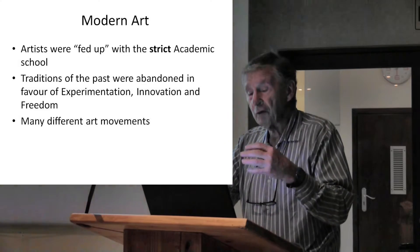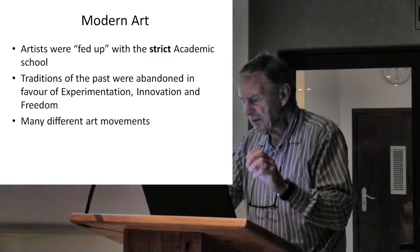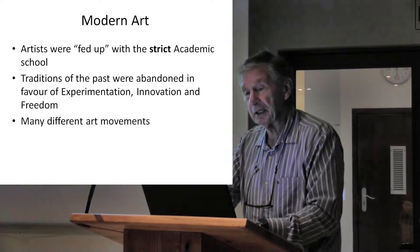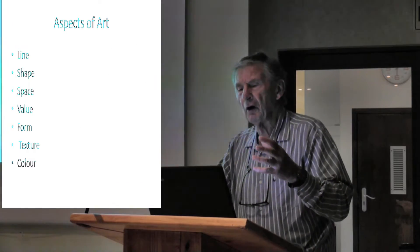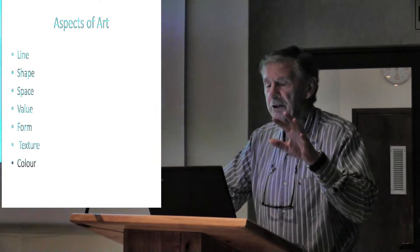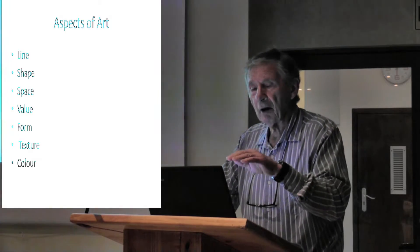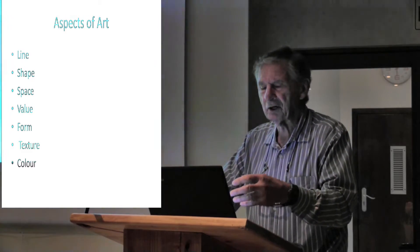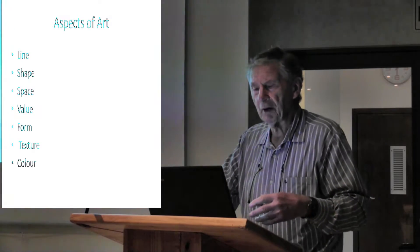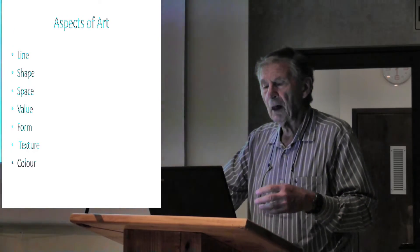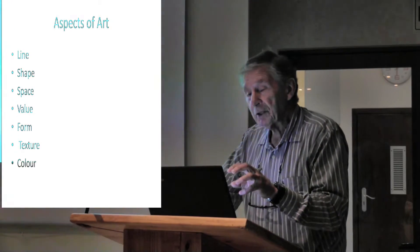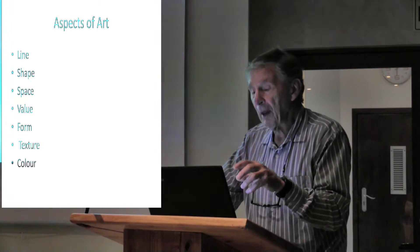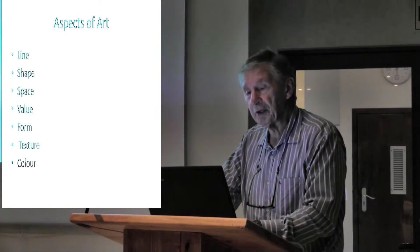There were many different art movements in this period of 110 years. If one looks at art, there are different aspects: line, shape, space, value, form, texture, colour. All of these could be changed and experimented on, and that's exactly what they did. You could change the line, the shape, the space, to make it different.